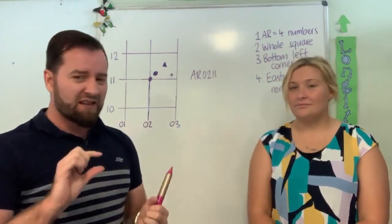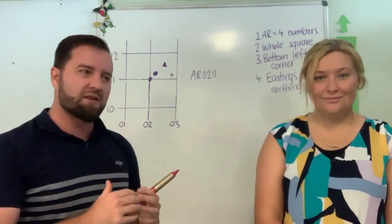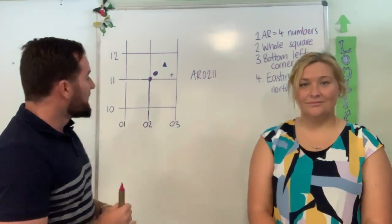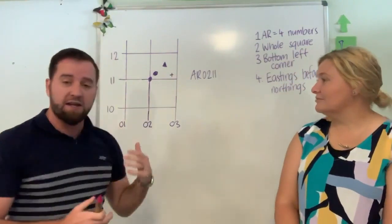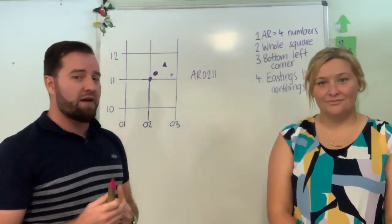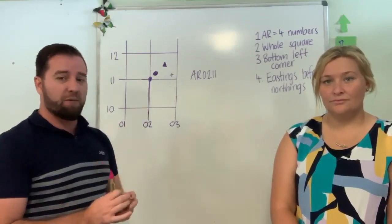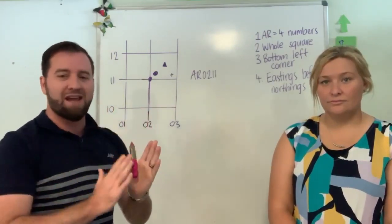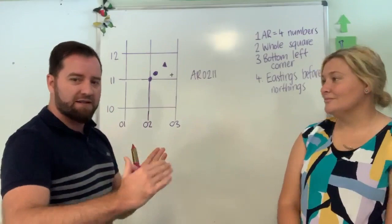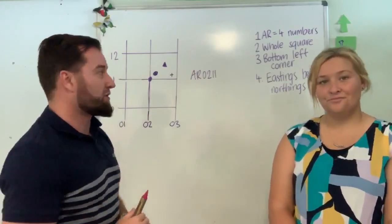Now we're going to do grid references. A little bit more complicated, but they just identify a more specific location. So we're going to have three shapes here. As Sammy said, it's the same area reference, but they do have different grid references. To get a grid reference, we're going to actually break up the area reference, the whole square, into 10 sections of our eastings and 10 sections of our northings to get more specific.